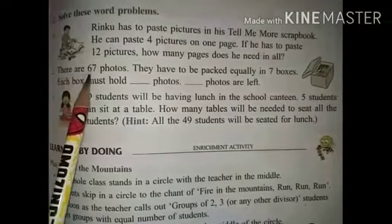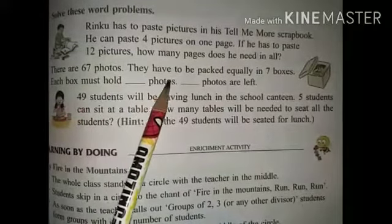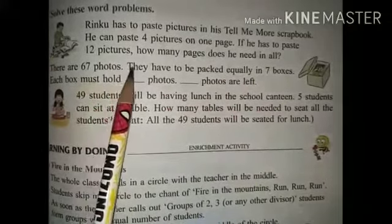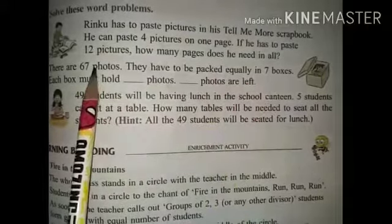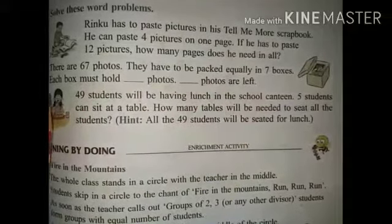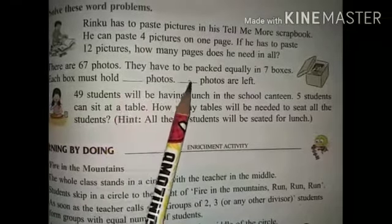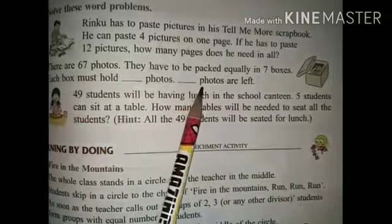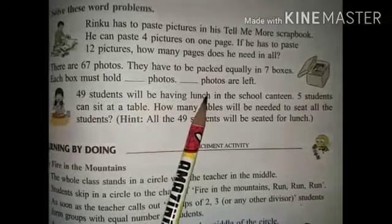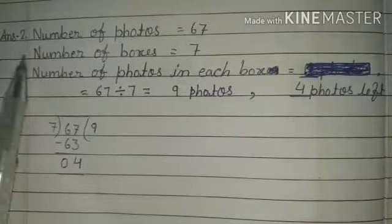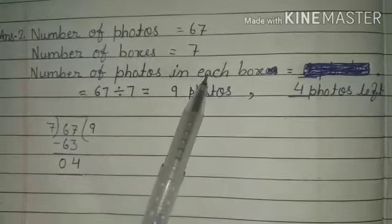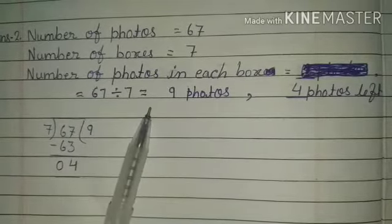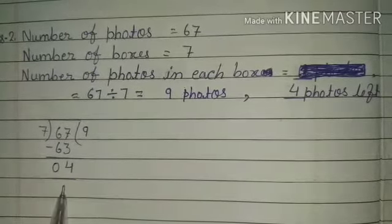Second question: there are 67 photos. They have to be packed equally into 7 boxes. Each box must hold how many photos, and how many are left? To find the answer: 67 divided by 7 equals 9 photos per box, with 4 photos left over.